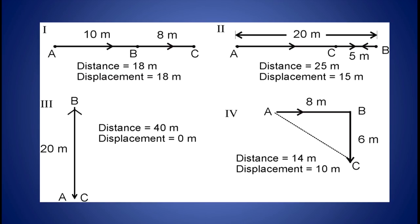Let an object move from position A to B then to C. The distance and displacement from A to C can be calculated. To calculate distance, the length of the path is to be calculated, and to calculate displacement, the change in position — that is, the difference of final and initial position — is to be calculated. For figure 1, distance equals AB plus BC, that is 10 plus 8, which equals 18 meters. And displacement, which is the difference between initial and final position, is AC which is equal to 18 meters.